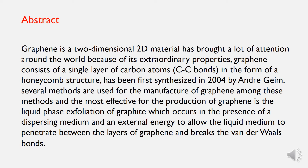Among these methods, the most effective for the production of graphene is the liquid phase exfoliation of graphite, which occurs in the presence of a dispersion medium and an external energy to allow the liquid medium to penetrate between the layers of graphene and break the van der Waals bonds.